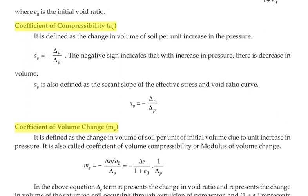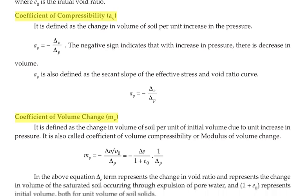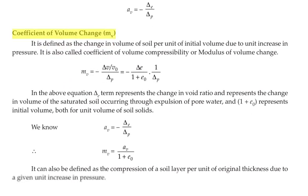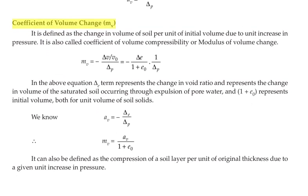Next we are going to see the coefficient of compressibility AV. It is the change in volume of soil per unit increase in pressure, where AV = −ΔV / ΔP. The negative sign indicates that with increase in pressure there is a decrease in volume. AV is also defined as the secant slope of the effective stress and void ratio curve, so AV = −ΔE / ΔP.